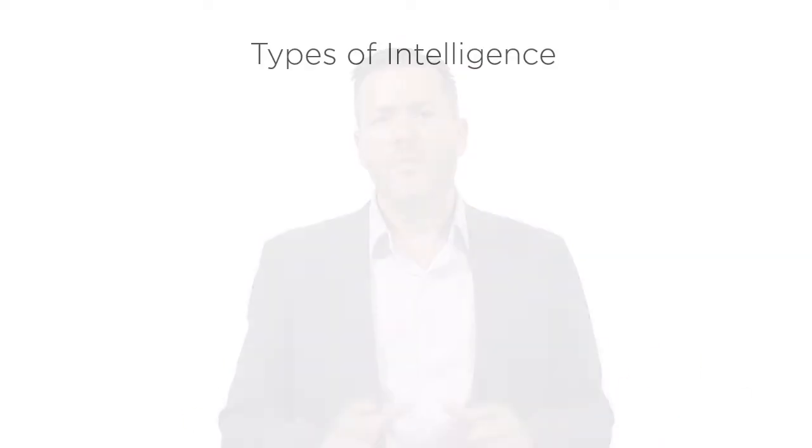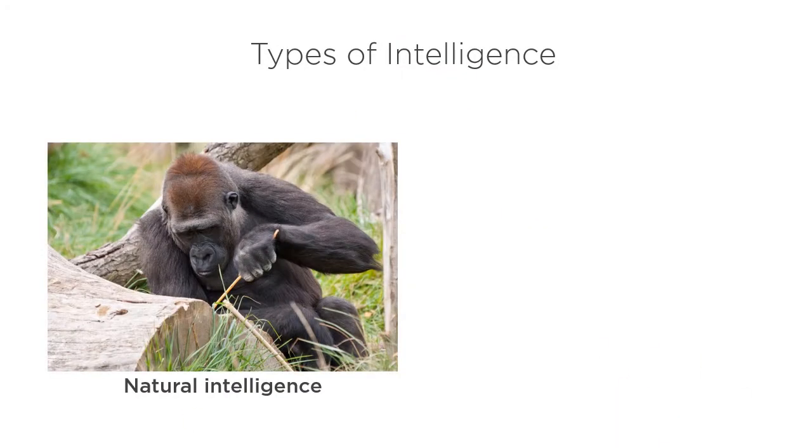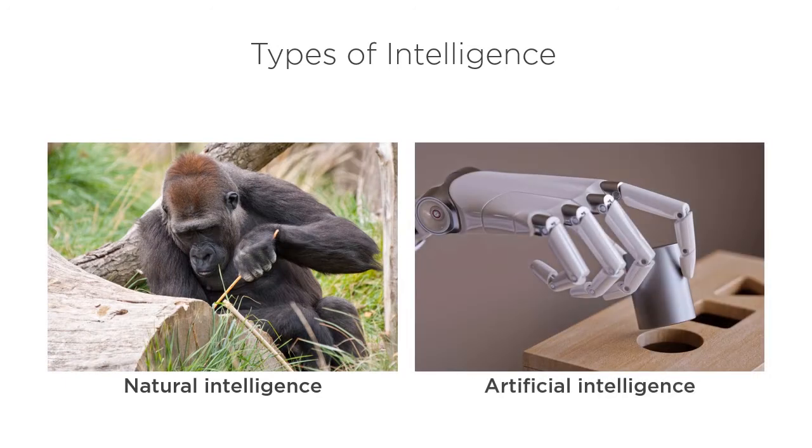How do we define artificial intelligence? What makes artificial intelligence different from natural intelligence? There are two main types of intelligence: natural intelligence and artificial intelligence.